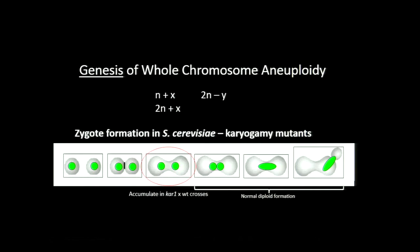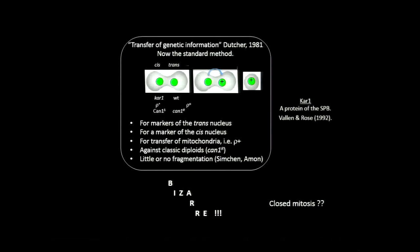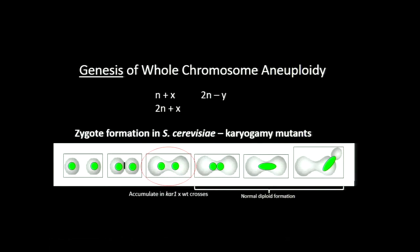Our workhorse for this is studying zygote formation in Saccharomyces cerevisiae. The well-established sequence of events is the following: we have the two haploid cells, they recognize each other, they form a zygote, subsequently the two nuclei have to congress, then they fuse, and now we're off to the next diploid generation.